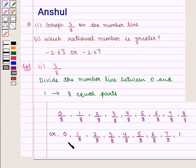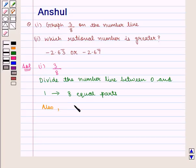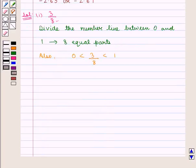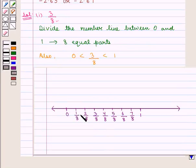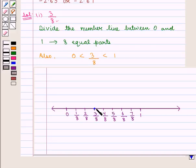Also, now we know that 3/8 lies between 0 and 1, that is 0 is less than 3/8 is less than 1. So we shall draw the number line showing 0 and 1, and label it with 0, 1/8, 2/8, 3/8, and so on up to 1. This number line is divided into 8 equal parts. Now we draw a dot on the number line at the point 3/8, and thus the fraction 3/8 is shown on the number line.